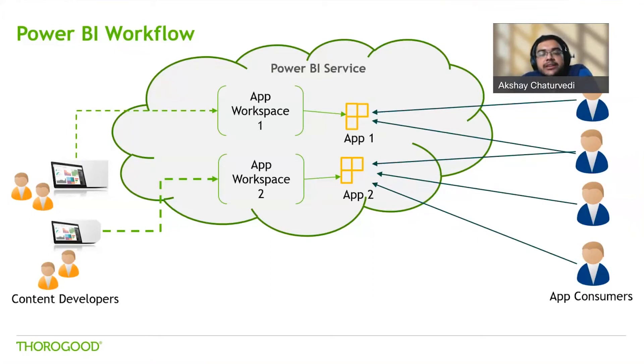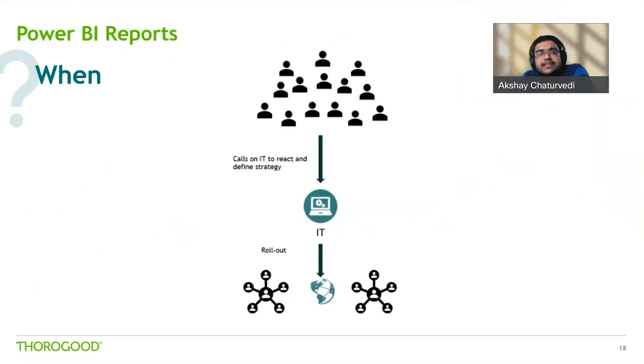Some additional functionality expected in future releases includes the ability to add Active Directory groups to app workspaces — today, you can only add individuals. In the future, we also expect to be able to push apps to end users directly, rather than users having to send a URL or find the app through the apps source. We also expect to be able to copy or move dashboards, reports, and datasets across workspaces.